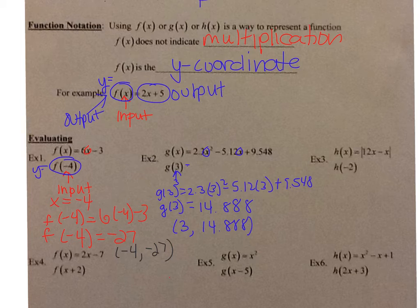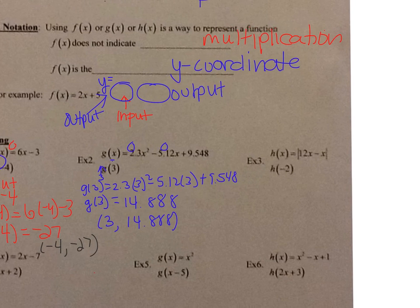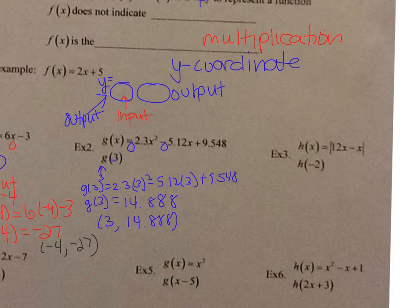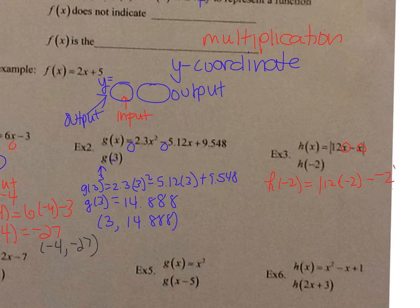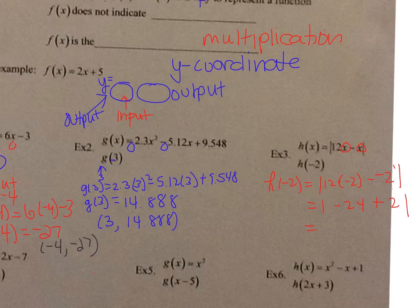For h(x) = |12x − x|, we're looking for h(−2). Plugging in −2: the absolute value of 12 times −2 minus (−2). Be careful with signs — that's |−24 + 2| = |−22| = 22. So h(−2) = 22.